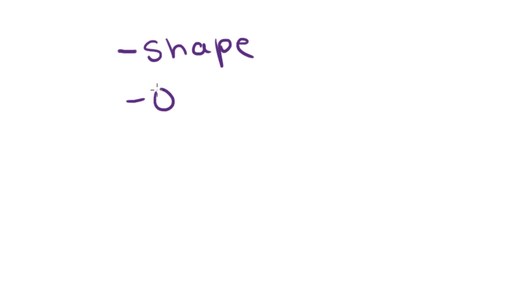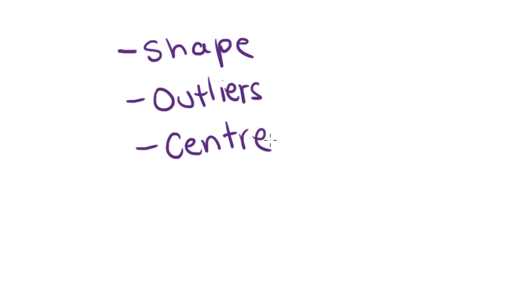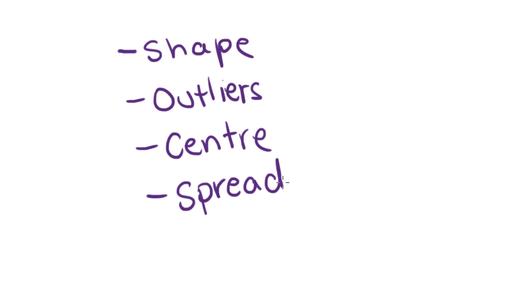You'll talk about the shape of the distribution. You'll also talk about the presence of outliers — whether there are any outliers that you can see. You might talk about the centre, so where roughly all the data is centred around, be that mean, median, or mode. And you'll also talk about the spread — how far spread out it is. Is it all close together or really far spread out? What's the range like?